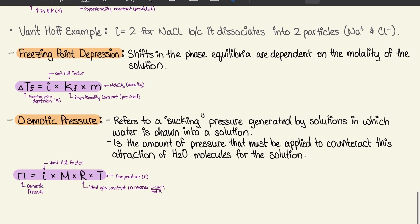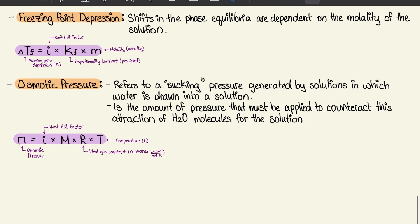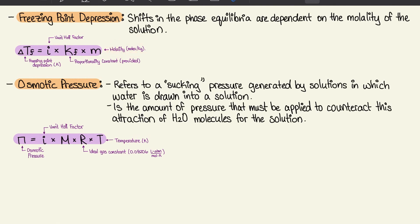Freezing point depression: ΔTf = i × Kf × m, where ΔTf is the freezing point depression in Kelvin, i is the van't Hoff factor, Kf is the provided constant, and m is molality in moles per kilogram.